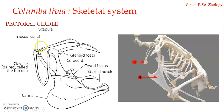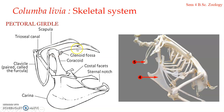The pectoral girdle is composed of the coracoid, the clavicle, and the scapula. It is formed of two halves, and each half is made up of a scapula, coracoid, and a clavicle. They are all stout structures present on either side of the body.